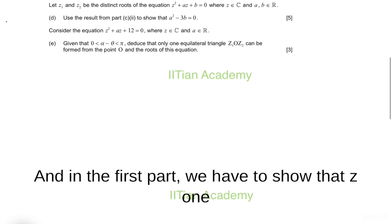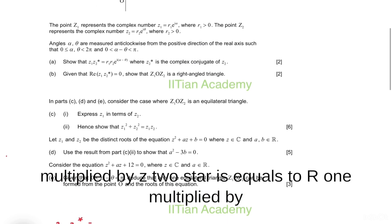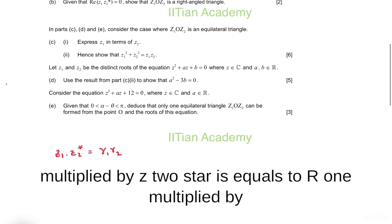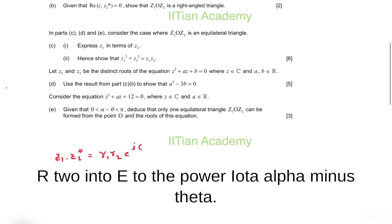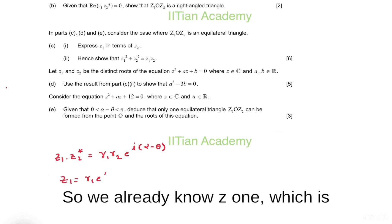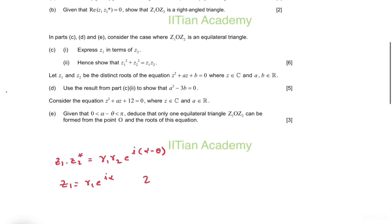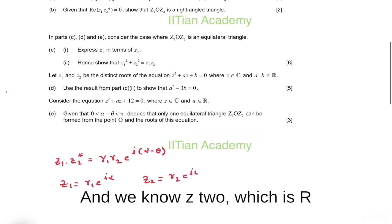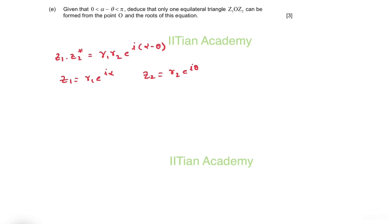In the first part we have to show that z1 multiplied by z2* equals r1 multiplied by r2 into e^(i(α−θ)). We already know z1 = r1·e^(iα) and z2 = r2·e^(iθ).